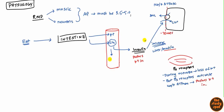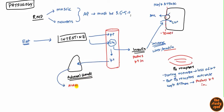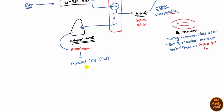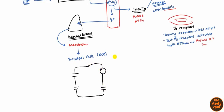When potassium travels through the blood vessel, it eventually makes its way to the adrenal gland. When it gets there, high potassium triggers the release of aldosterone. Aldosterone has an effect on the principal cells, which are found in the distal convoluted tubules and in the collecting ducts. Let me draw a quick cell here — this is the principal cell found in the kidney nephron, with blood on one side and the tubular lumen on the other where urine is excreted.